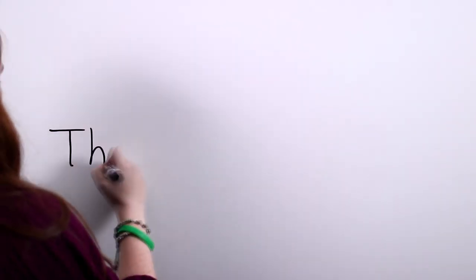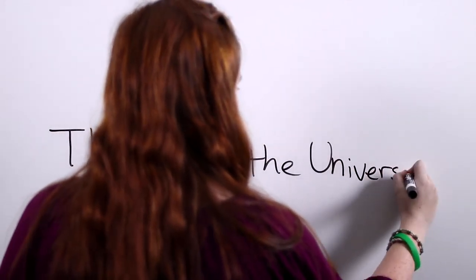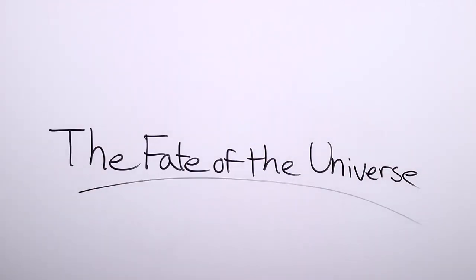Our universe is a closed system, so we can use entropy to describe both the past and the future. As our entropy increases, so does our number of positions. Therefore, we can assume that the universe started out as an infinitesimally small spot. A point proposed by the Big Bang theory supports this conclusion, since everything expanded outwards from one small speck of matter into a universe that is 13.8 billion light years across.